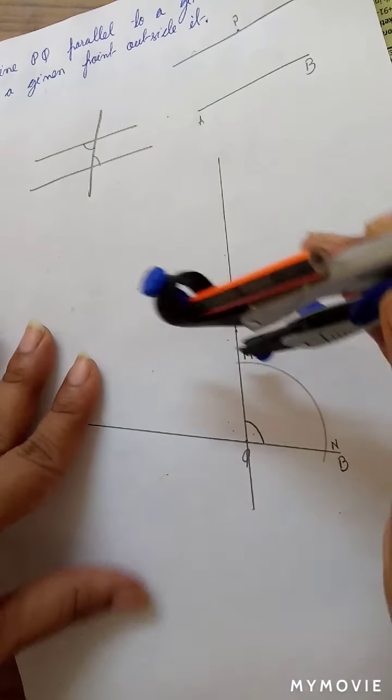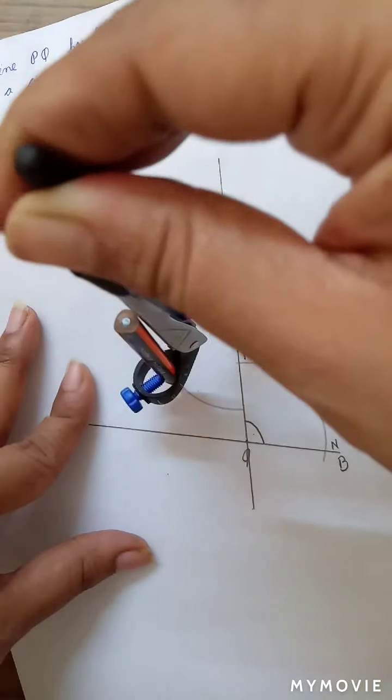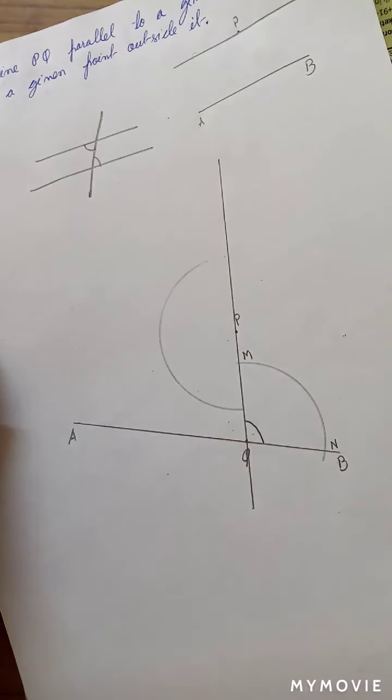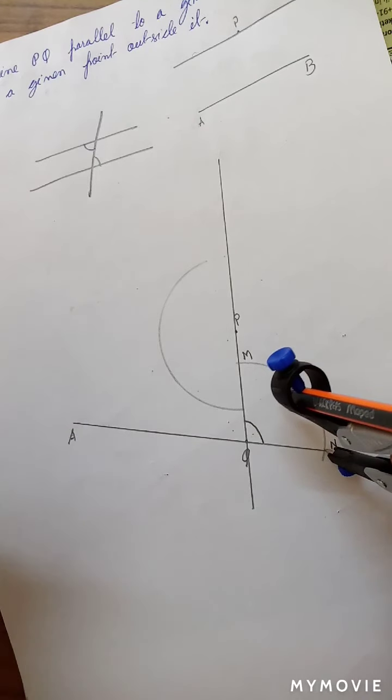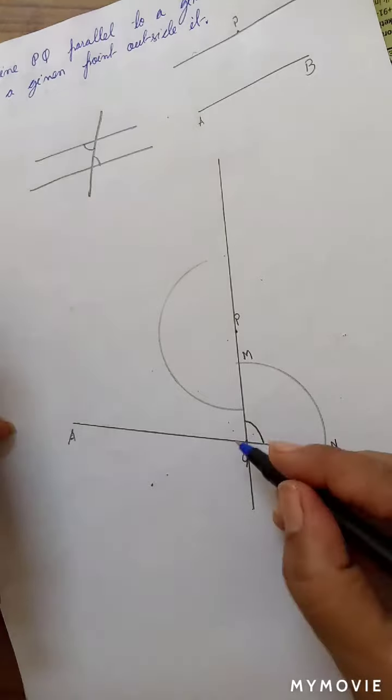Again, this time with P as the center, draw an arc on the opposite side. Now, let's take the measurement of angle M, Q, N. That is, this angle.